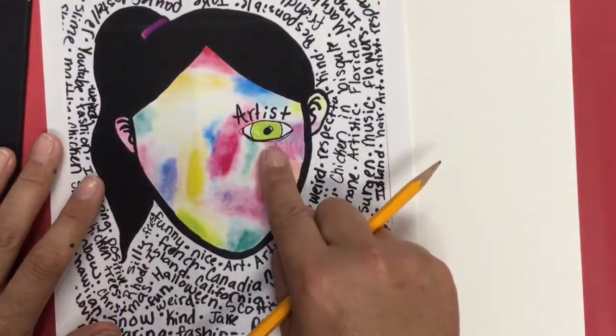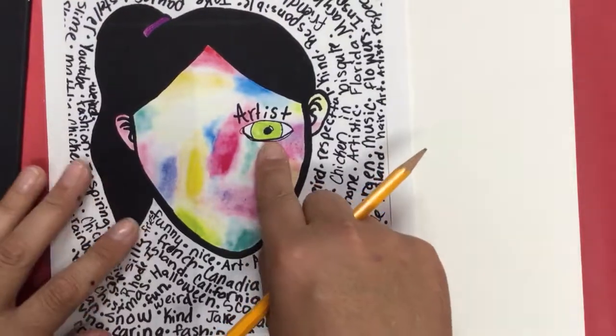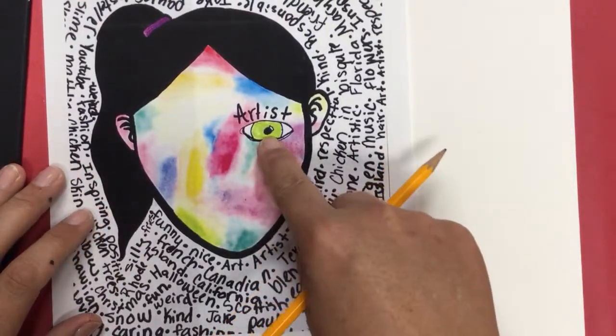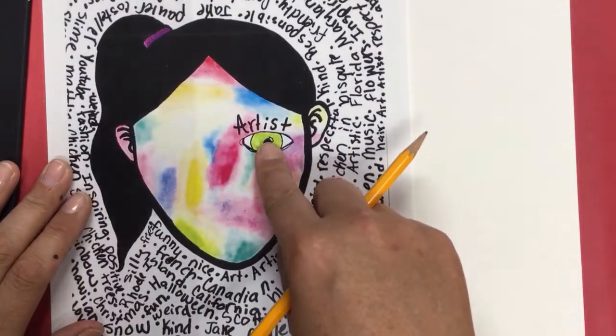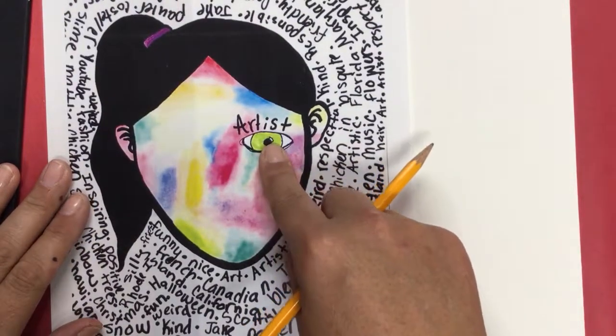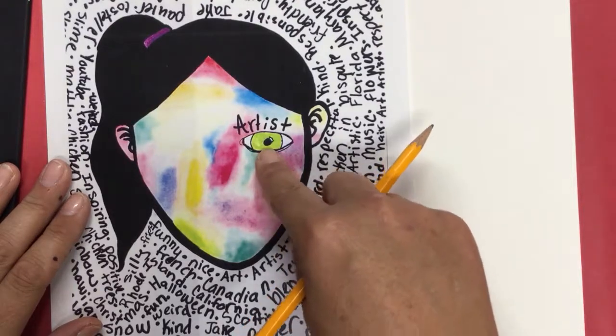That's what's interesting about this self-portrait. There's one eye because it's the eye that you see yourself with and the eye that other people see you with. So your mom might say you are a daughter whereas you might say I am a sister.